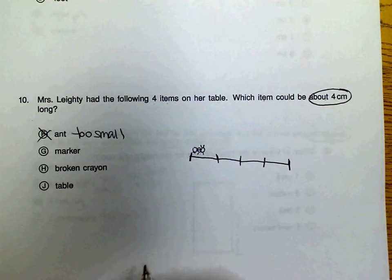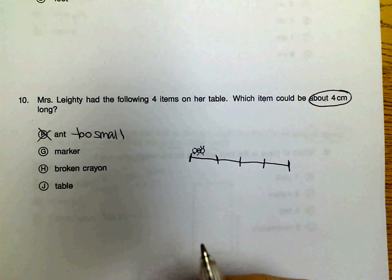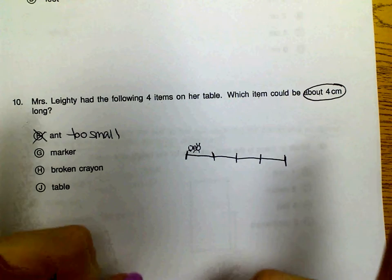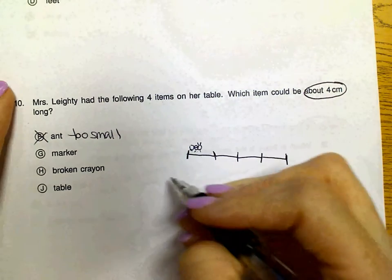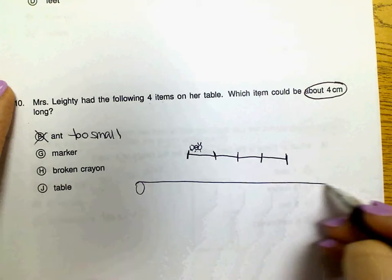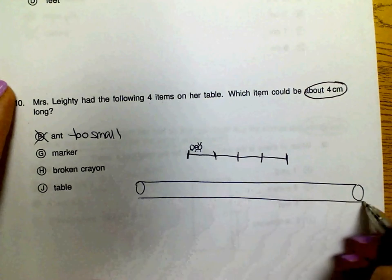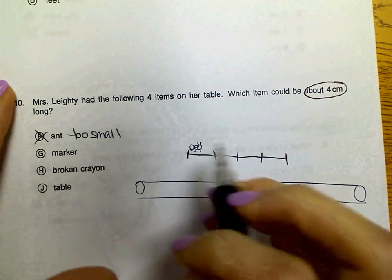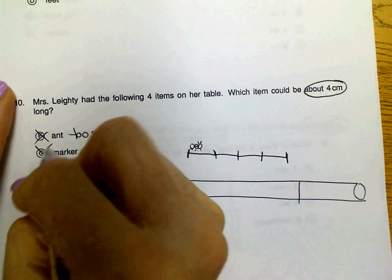A marker. If they're looking around the room thinking about a marker, it's about that long. So they know that a marker would be way longer than four centimeters. So we're going to cross that off of our list.